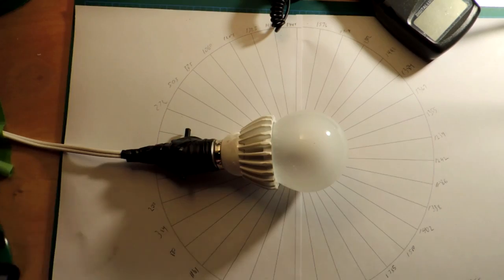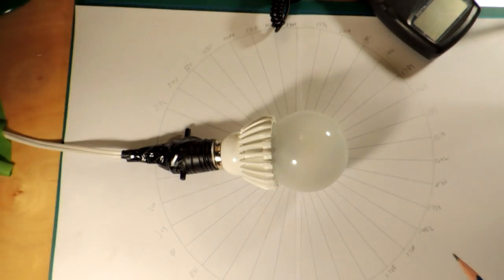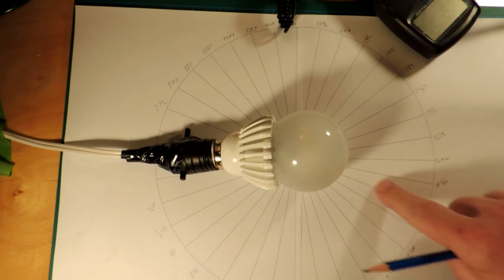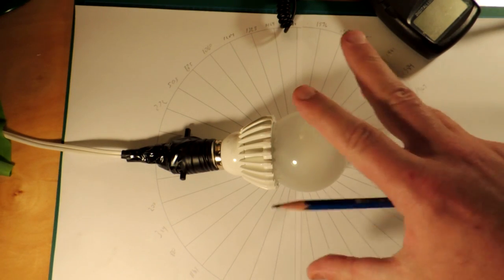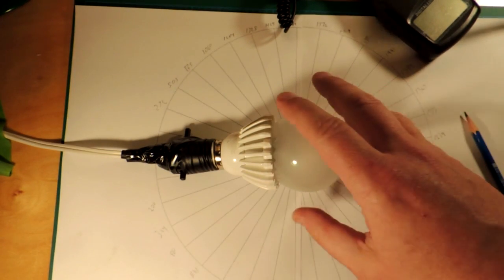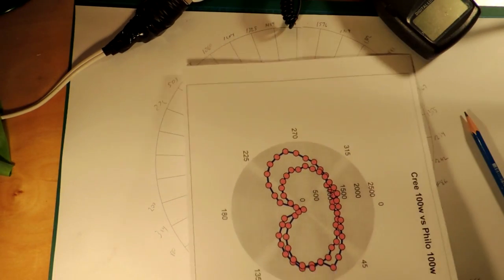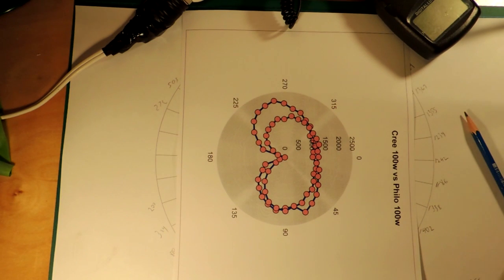Okay, light distribution patterns. What I have here, of course, is a polar graph. And I've recorded the intensity of light coming out at 10-degree angles to get some indication of how the bulb performs. This is important because LED bulbs are all over the place. Some are quite good emulations of the incandescents they're trying to replace, and some are quite poor.